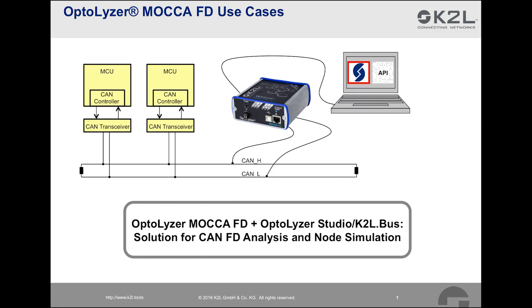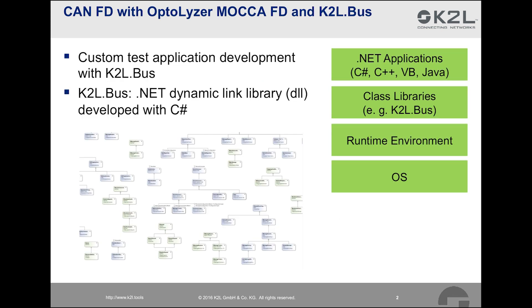So far, we have explained how Optalyzer Mokka-FD can be used with K2L's Optalyzer Studio software, which should cover all the standard use cases during the development process. If you have very specialised use cases, you can use your Optalyzer Mokka-FD device with a custom application based on the K2L Bus API. K2L Bus is a .NET dynamic link library developed with C#. At the bottom of the .NET framework layers is the operating system, then a runtime environment that executes intermediate code, followed by class libraries that can be employed during development. K2L Bus is an example of such a library used for developing custom .NET test applications that control devices of the Optalyzer Mokka family.